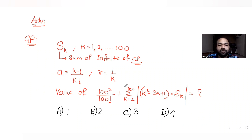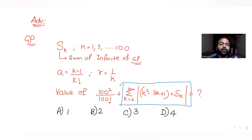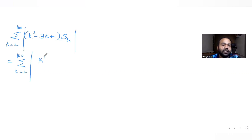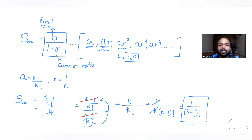Now let's evaluate the summation part: summation from k=2 to 100 of (k²-3k+1)·S_k. Since S_k = 1/(k-1)!, we write (k²-3k+1)/(k-1)!. To simplify k²-3k+1, we split -3k as -2k - k, so the numerator becomes (k²-2k+1) - k, which is (k-1)² - k.